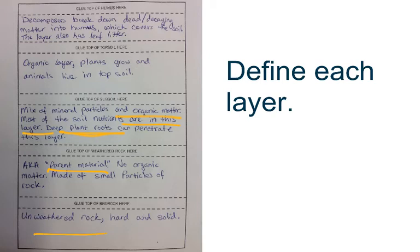At the bottom, we have our bedrock, where we have unweathered rock, hard and solid. It would be very difficult for plants to reach through this layer. It's solid rock. Go ahead and take a minute to pause the tutorial and write down your definitions.